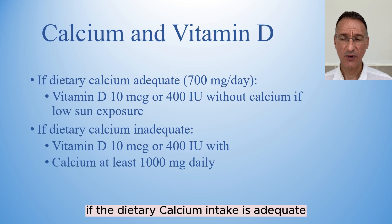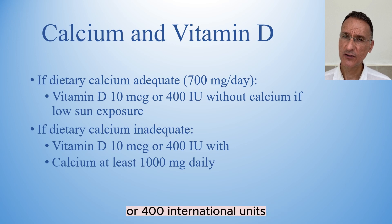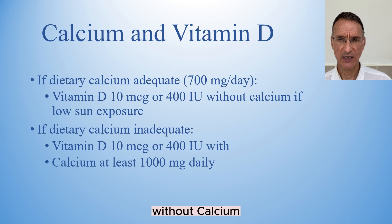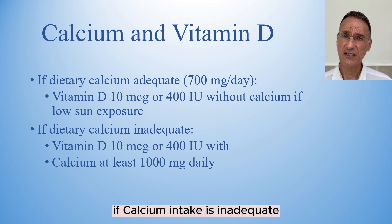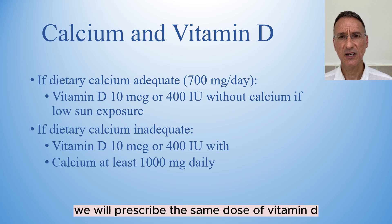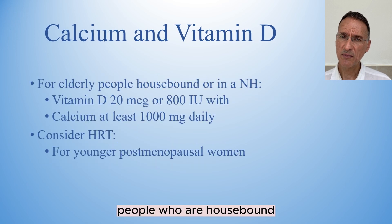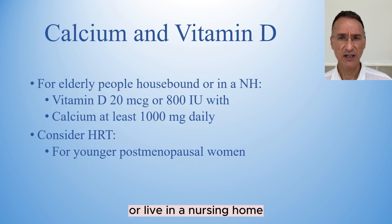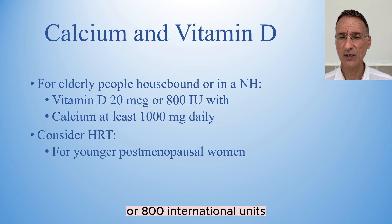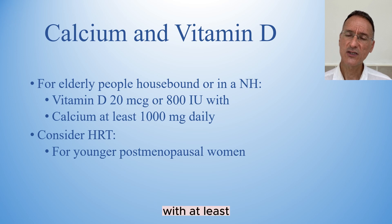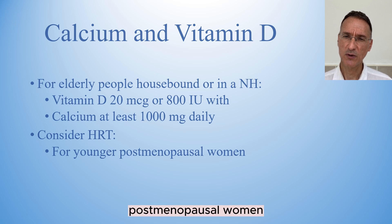If the dietary calcium intake is adequate — that is 700 mg a day — we will prescribe 10 micrograms or 400 international units of vitamin D without calcium for people not exposed to much sunlight. If calcium intake is inadequate, we will prescribe the same dose of vitamin D with at least 1000 mg of calcium daily. For elderly people who are housebound or living in a nursing home, we will prescribe 20 micrograms or 800 international units of vitamin D with at least 1000 mg of calcium daily. We will also consider HRT for younger postmenopausal women.